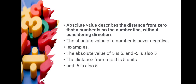Now let us learn about absolute value. The absolute value of a number means only the numerical value, irrespective of the sign — it is how many units of distance the number is from zero. For example, the absolute value of negative five is five, because it is five units from zero. Similarly, positive five also has an absolute value of five.